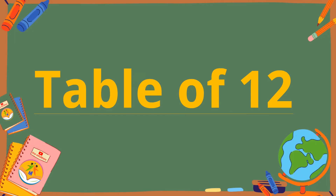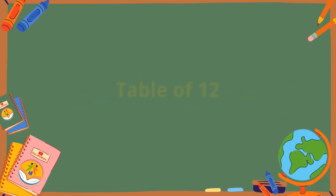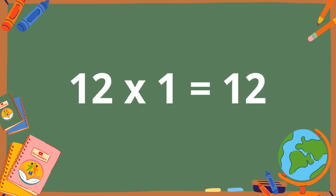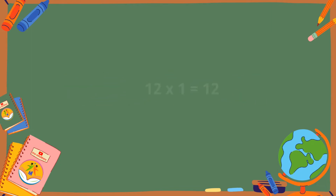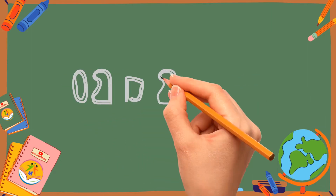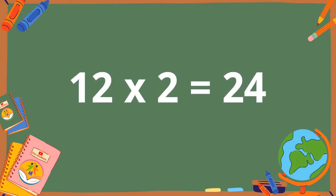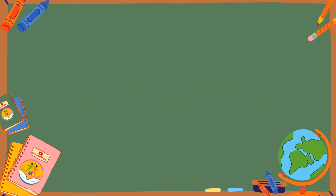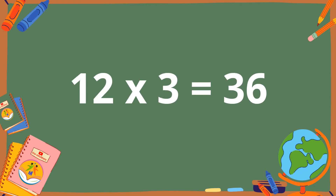Table of 12. 12 ones are 12. 12 twos are 24. 12 threes are 36.